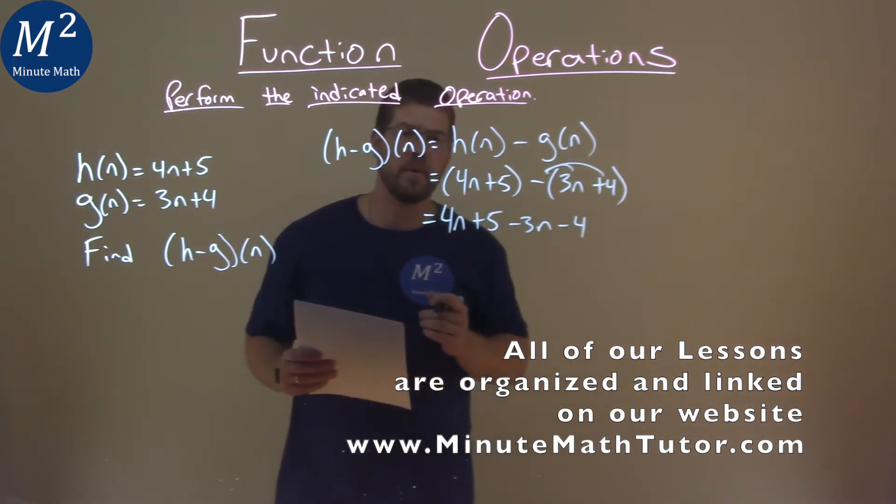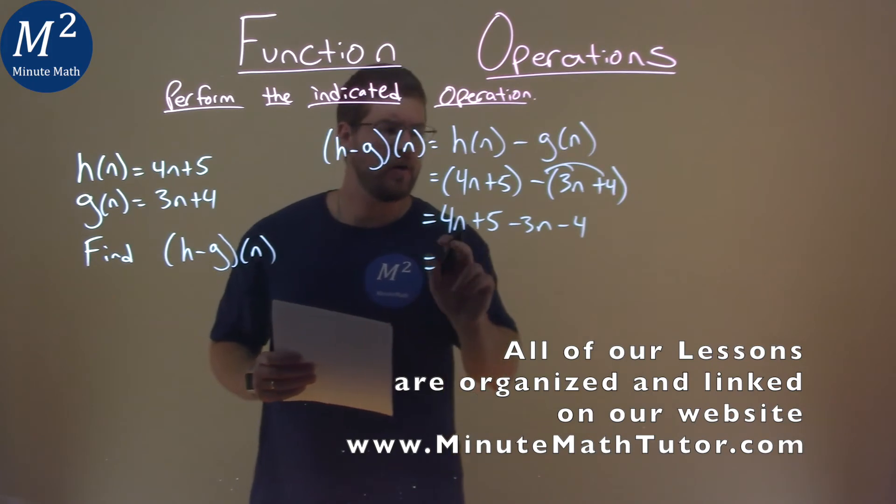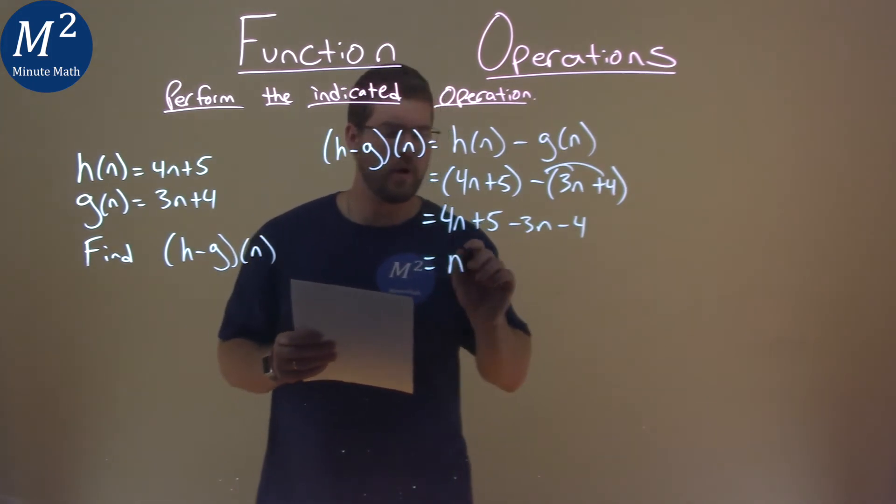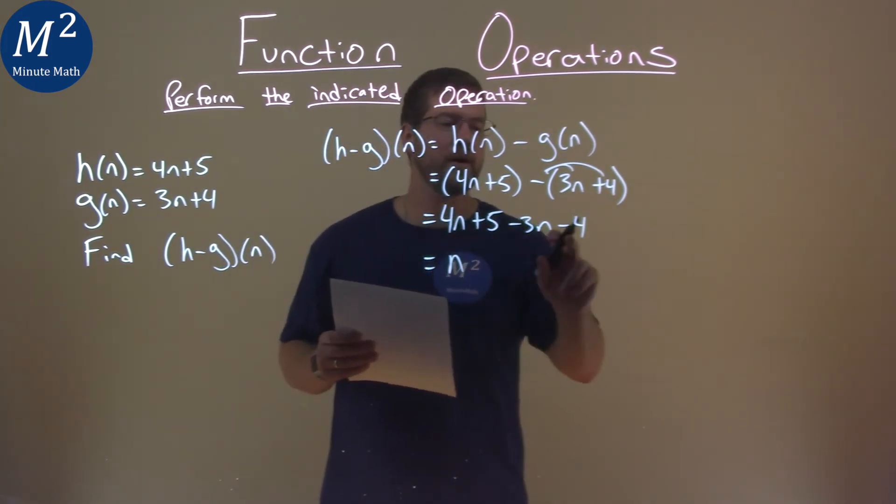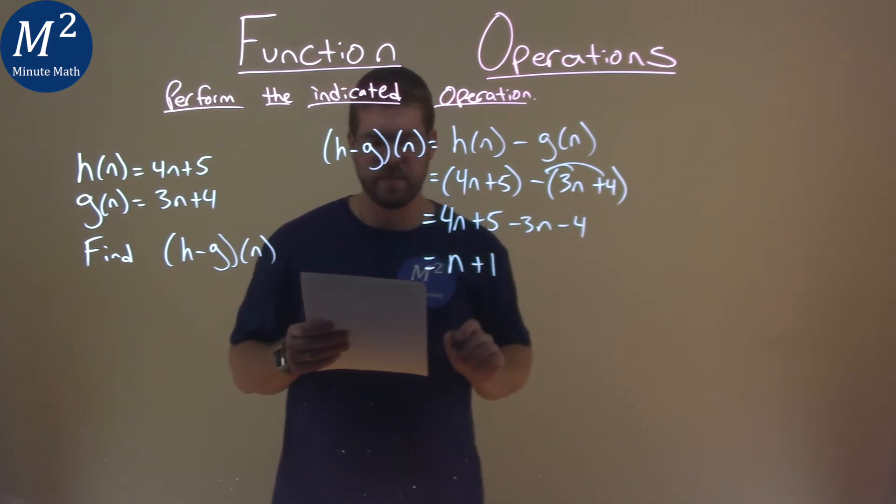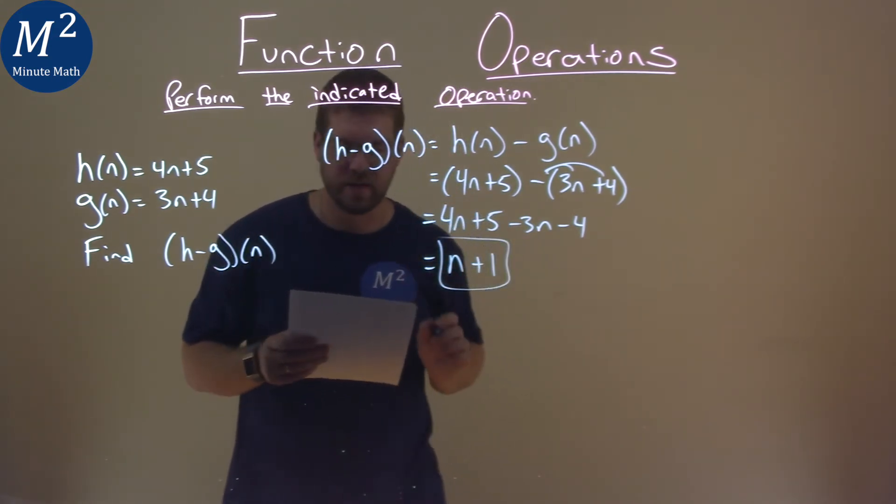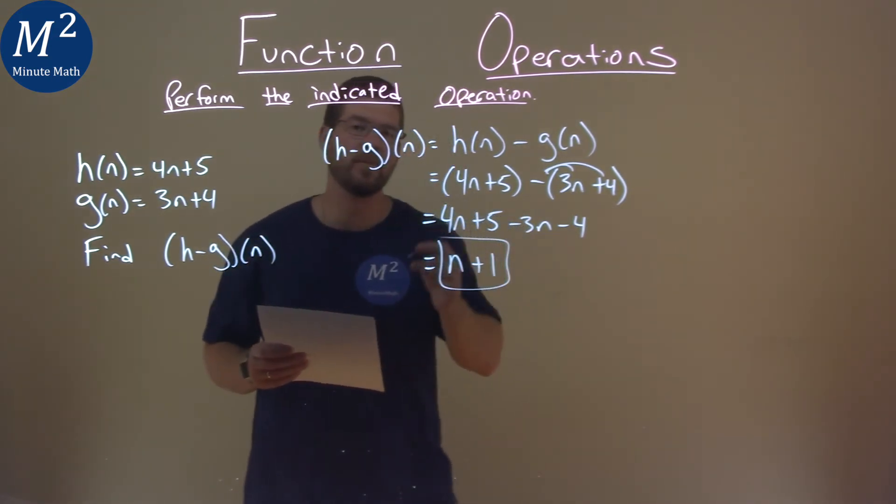Now we have to combine our like terms. 4n minus 3n is 1n, and 5 minus 4 is a positive 1. And so our final answer here is just n plus 1.